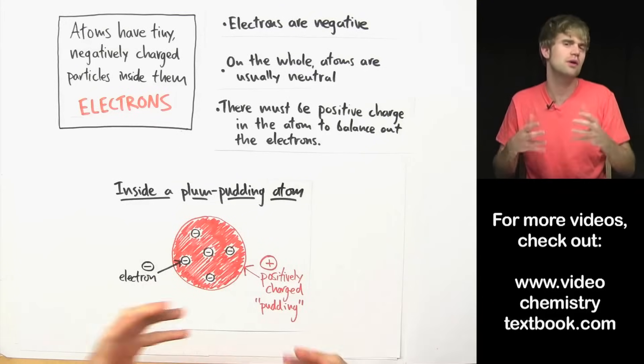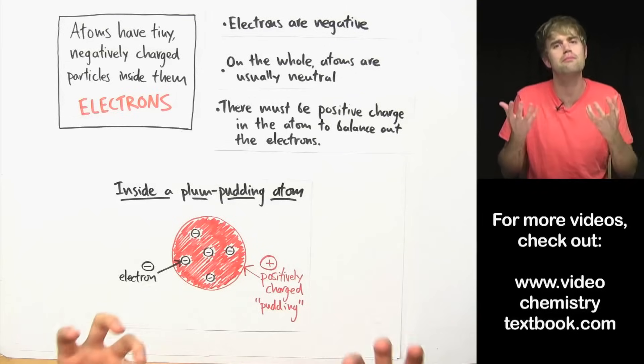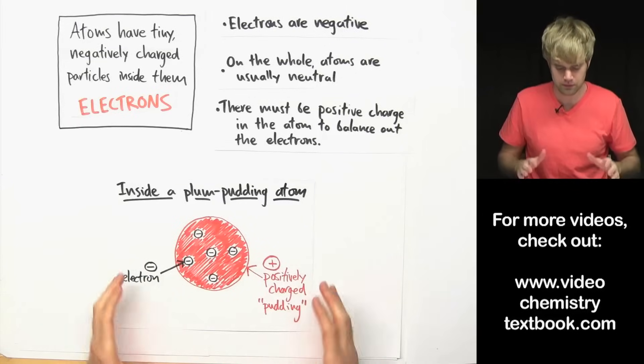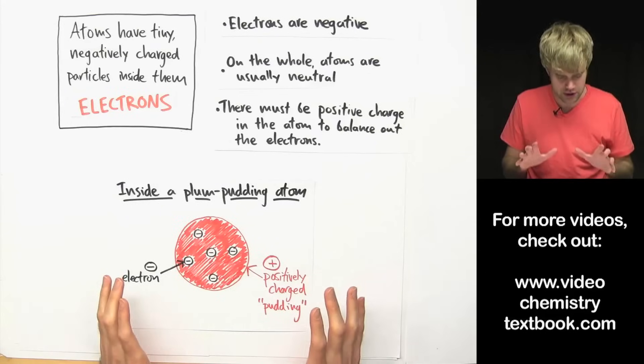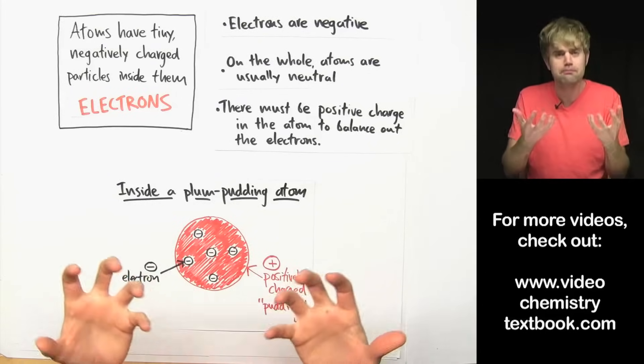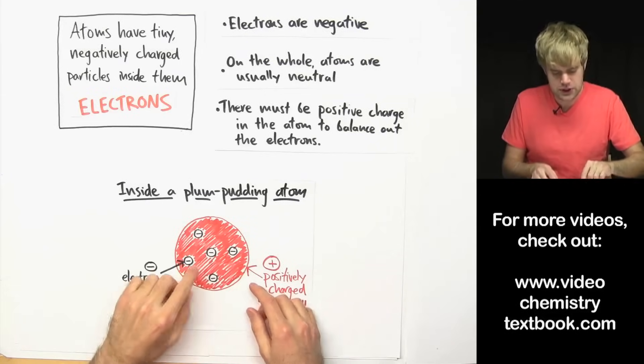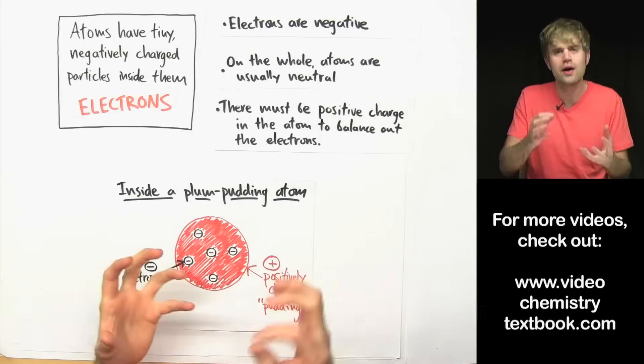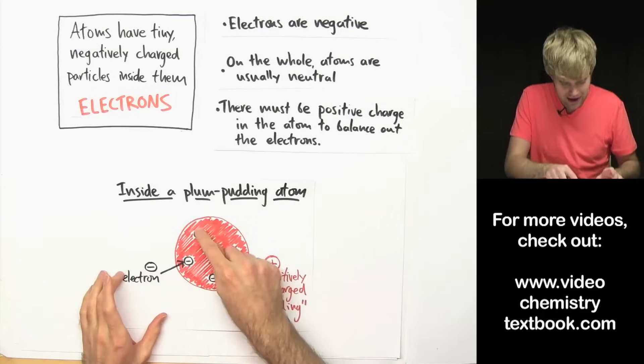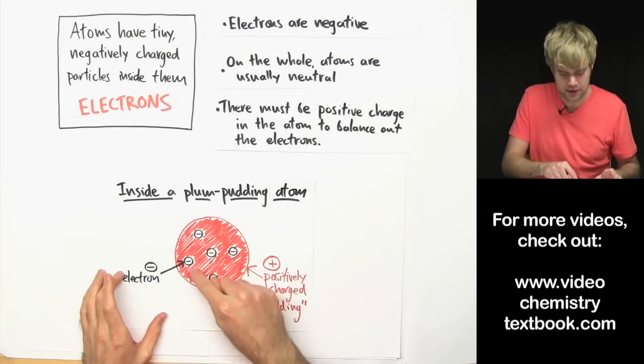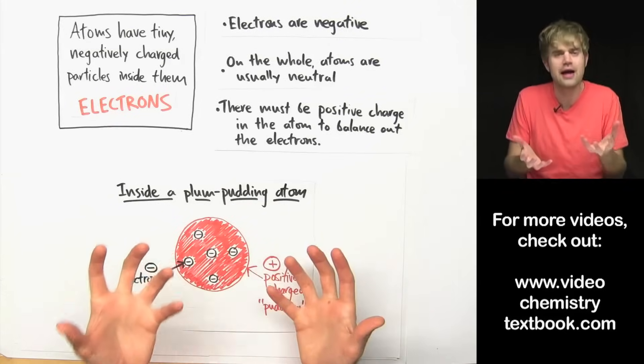Now plum pudding is kind of a British thing. So if you're American, it might be better for you to think about this as like the blueberry muffin model. And here's how it works. Thompson imagines that the atom is like a blueberry muffin and that electrons are stuck in this atom the way blueberries are stuck in a blueberry muffin.